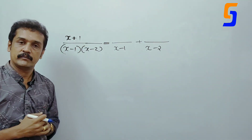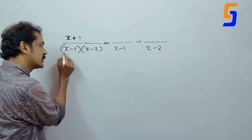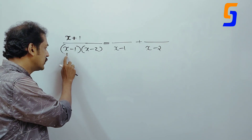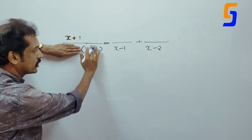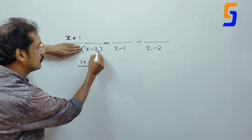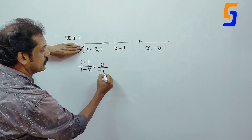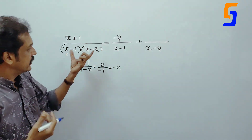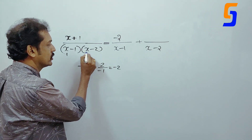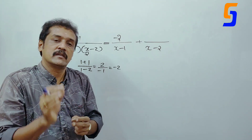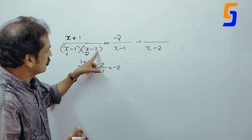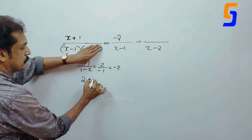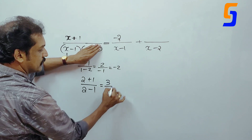First bracket x-1: x-1 is 0, so x is 1. First denominator: 1 minus 2. Then x-2 is 0, so x is 2. That is 2 plus 1 by 2 minus 1, that is 3 by 1. Answer is 3.